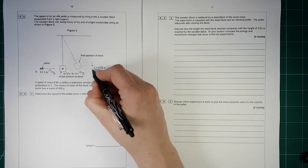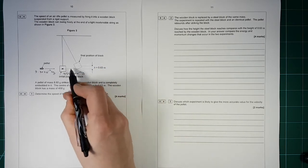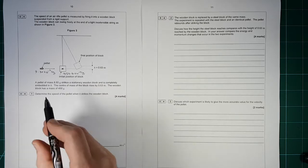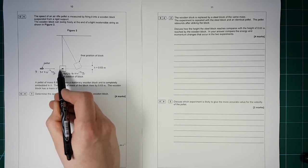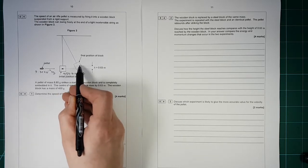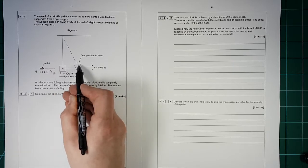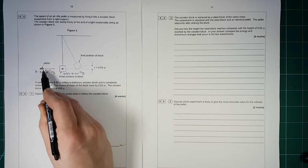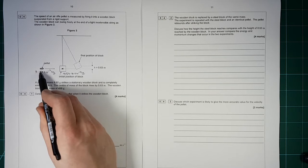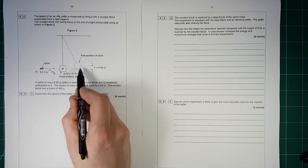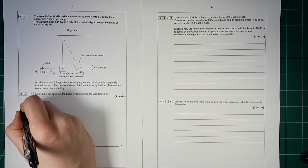So the height difference will give us the energy between here and here and we can then work out the speed of this block before it starts to swing up or just as it's starting to swing up. And then we can use momentum to work out the speed of the pellet in the first place. So we'll work backwards. So using energy.